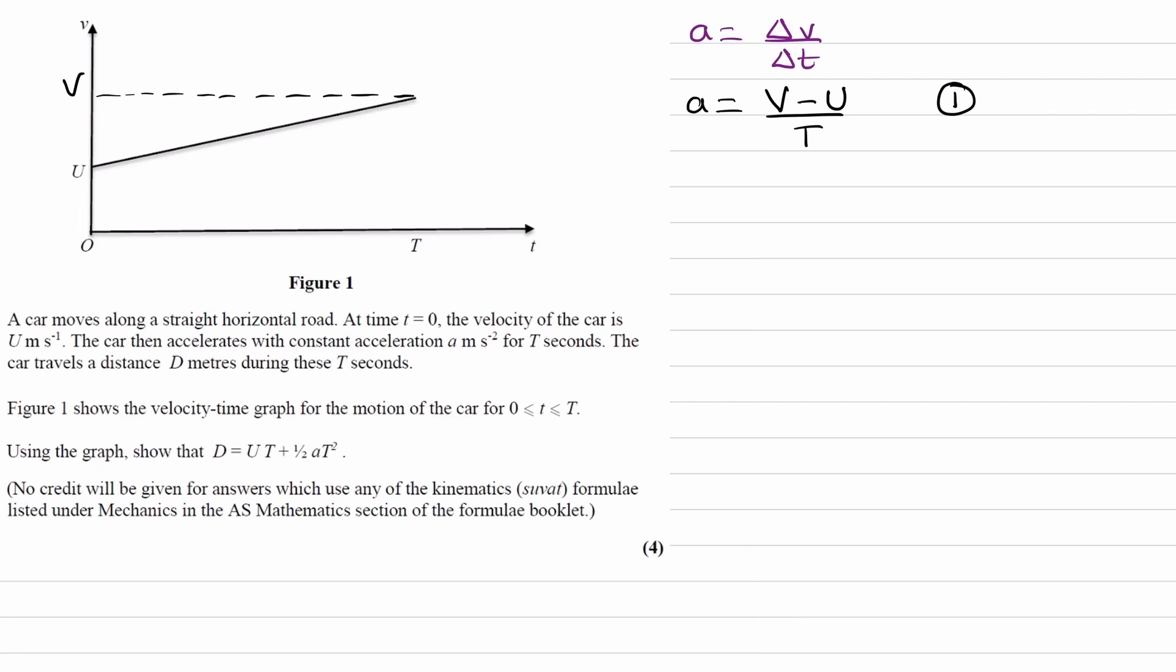The second equation that we can get is from the area underneath the graph. So the area underneath the velocity time graph represents displacement. So in this case, well, we'd first of all be using the area of a trapezium. So the area would be a half A plus B times H. That's the area of a trapezium. Now in this case, the A and the B would be U and V. And the height would be this length here, T.